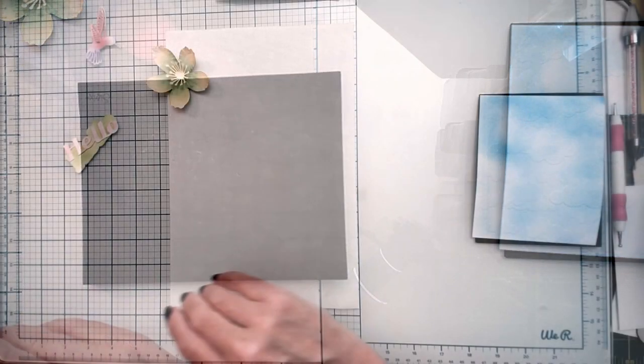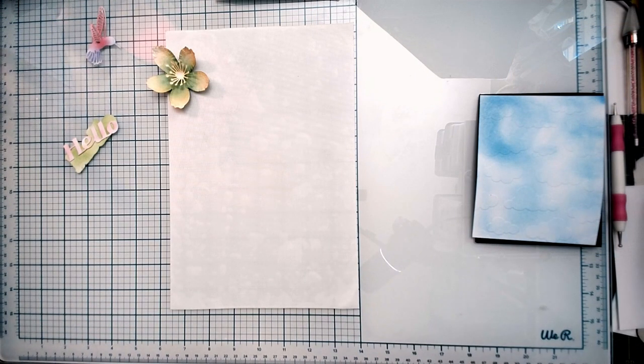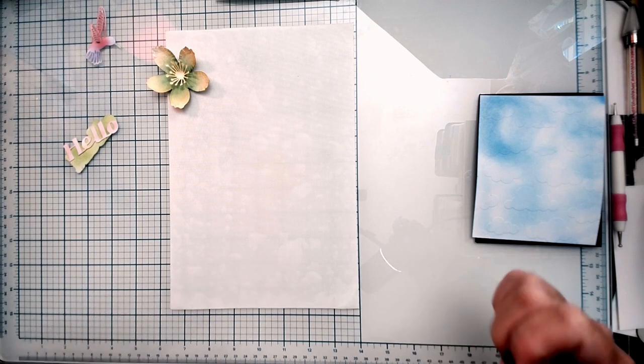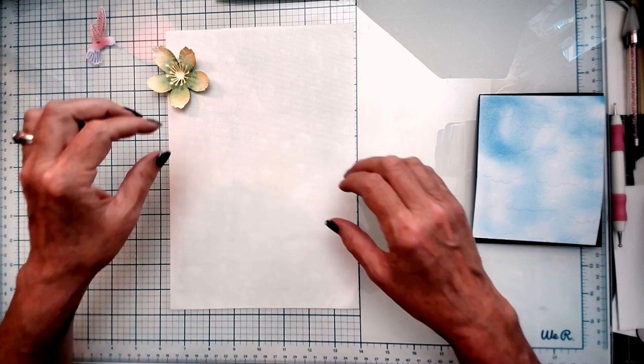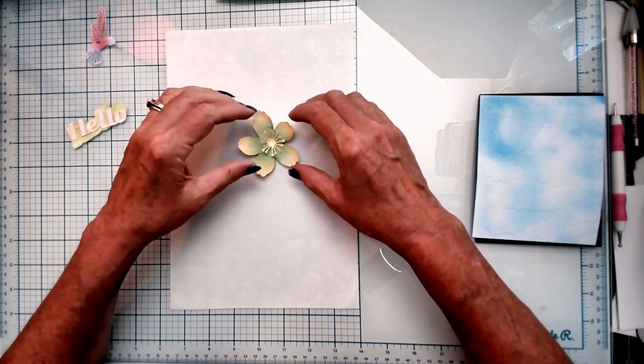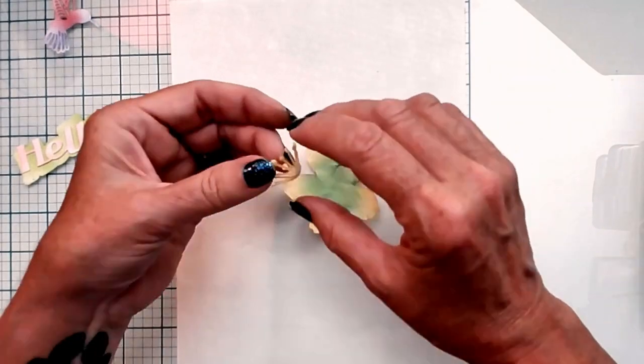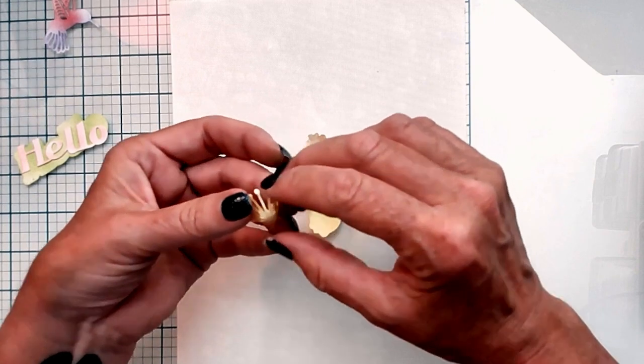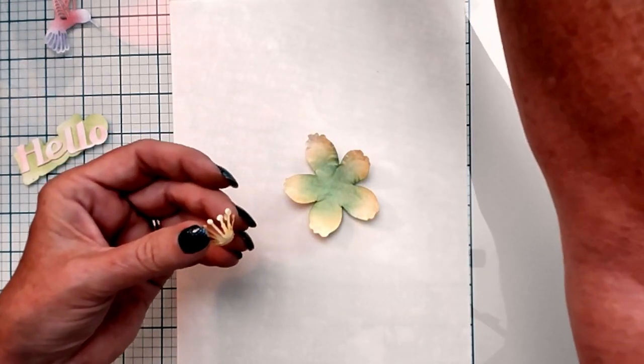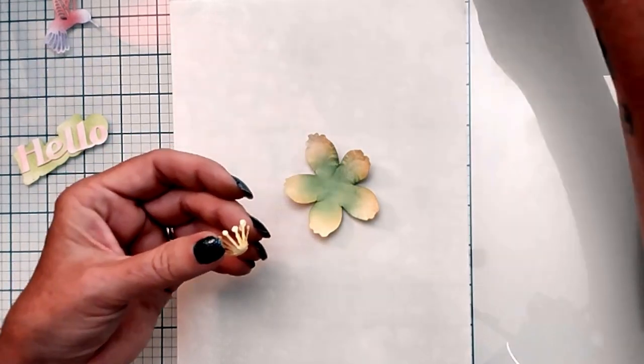So now comes the best part. Let's start assembling! First we're going to start off with the flower. We want to make sure that we put the stamen in the center of the flower so that everything's attached before you glue it to the card.